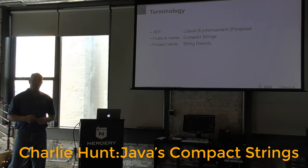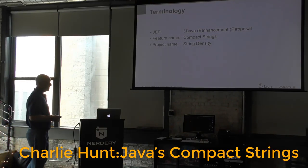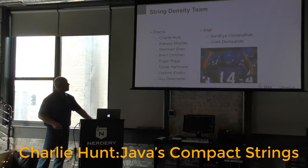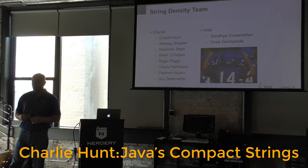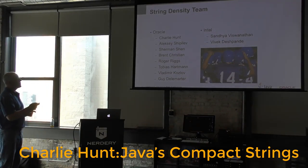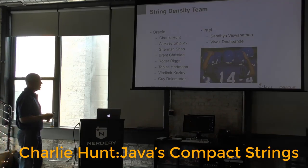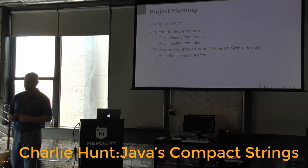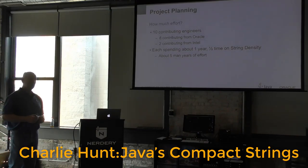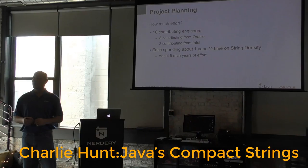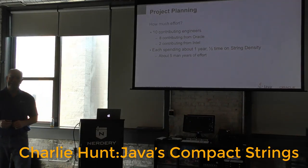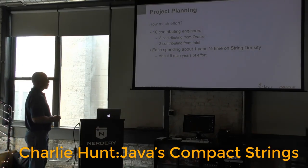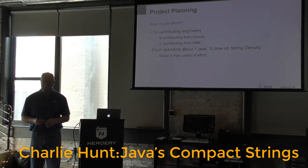The feature name was Compact Strings. Internally we referred to the project as String Density — density meaning we're trying to reduce memory footprint. A large number of people worked on this, including contributors from Oracle and Intel. It might sound simple — just changing a character to a single byte — but there is an enormous amount of work that goes into this.